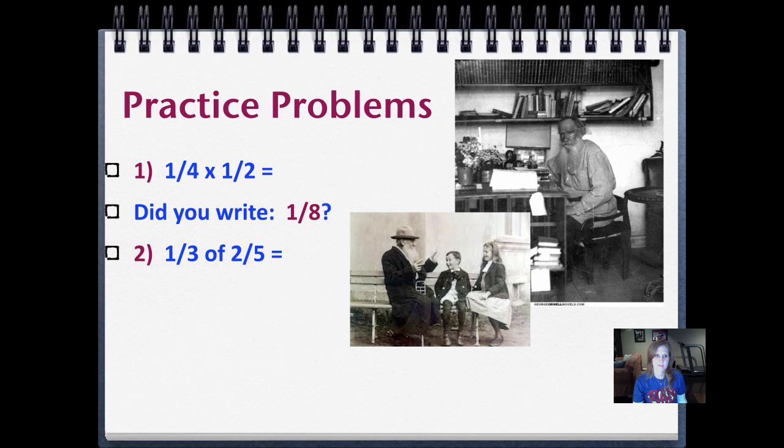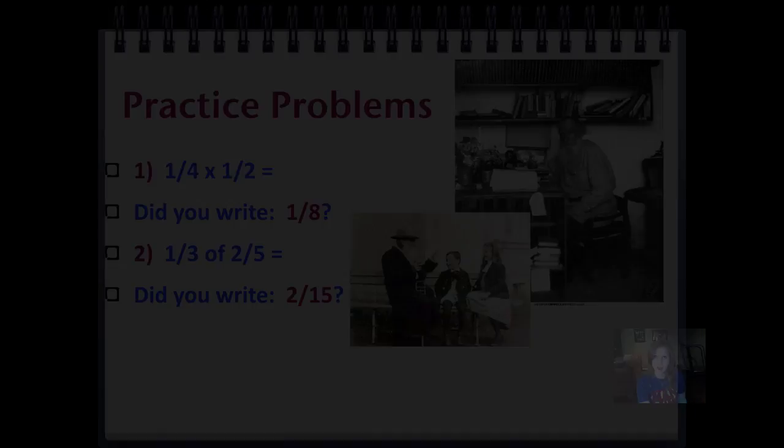Problem number two. One-third of two-fifths. So go ahead, use the standard algorithm to solve it, draw a model, and to support your answer, pause it and push play when you're ready. Okay, did you write two-fifteenths? Sounds crazy, but we can draw a model to show that it's true. Let's do that.